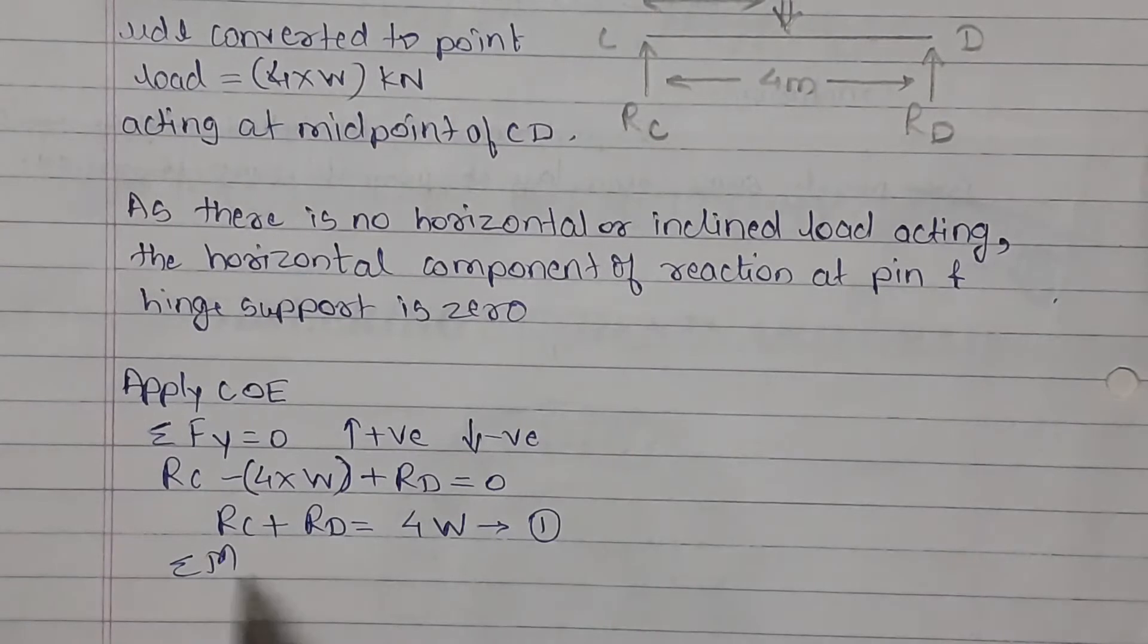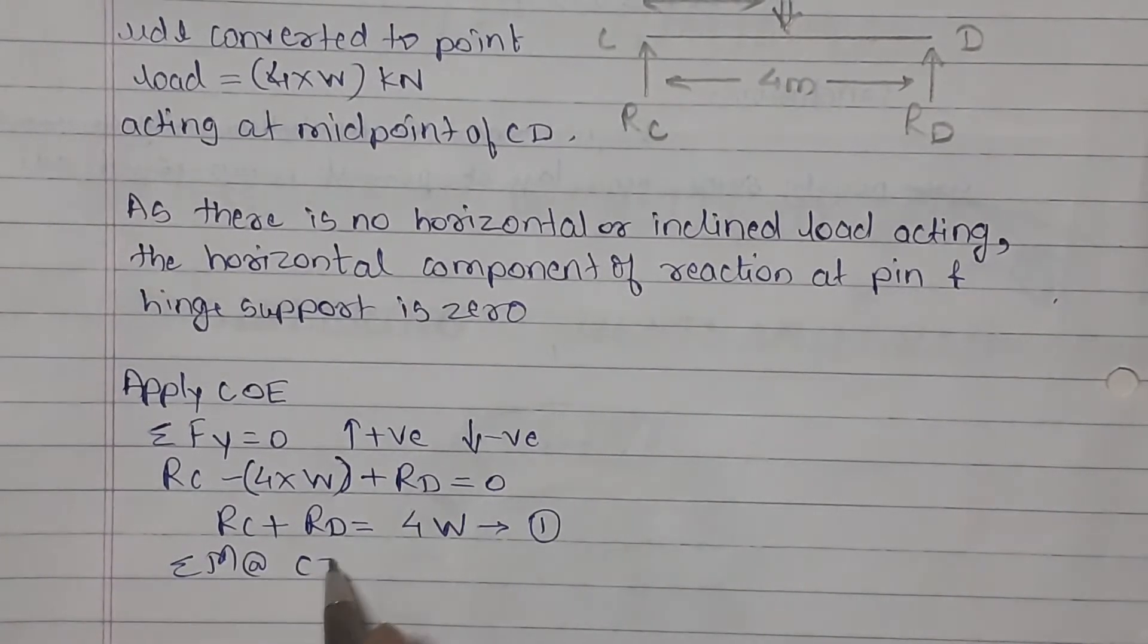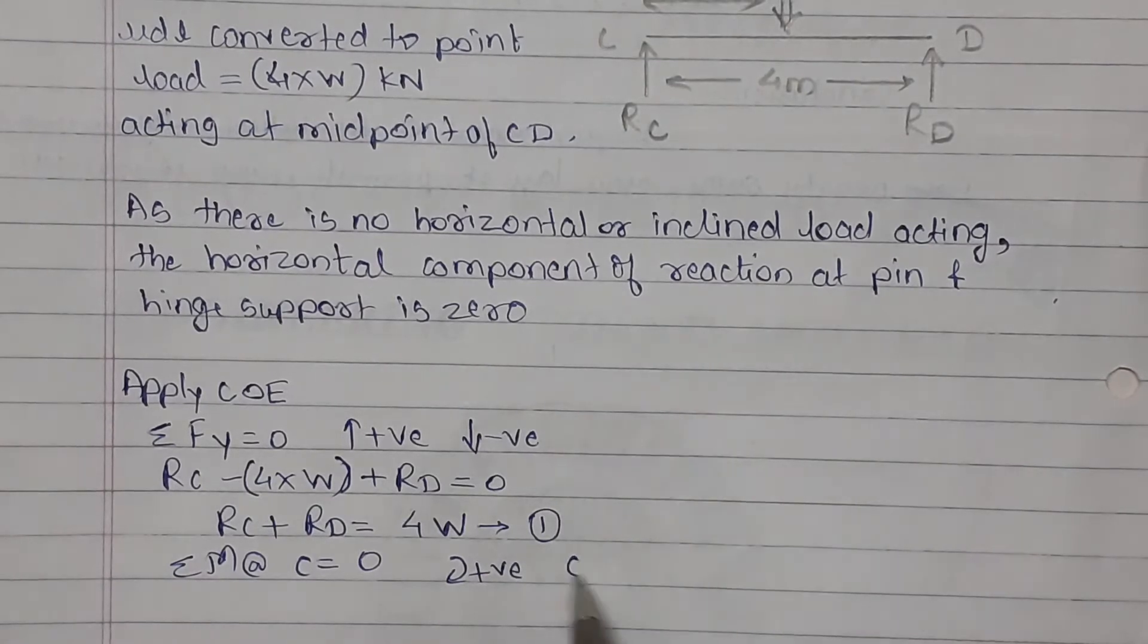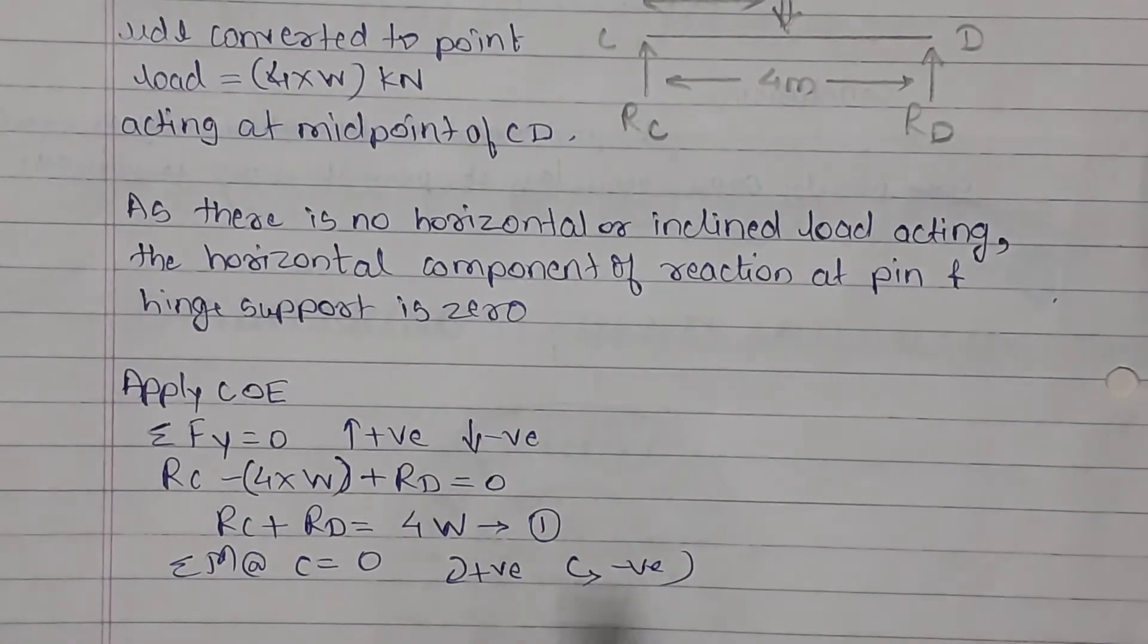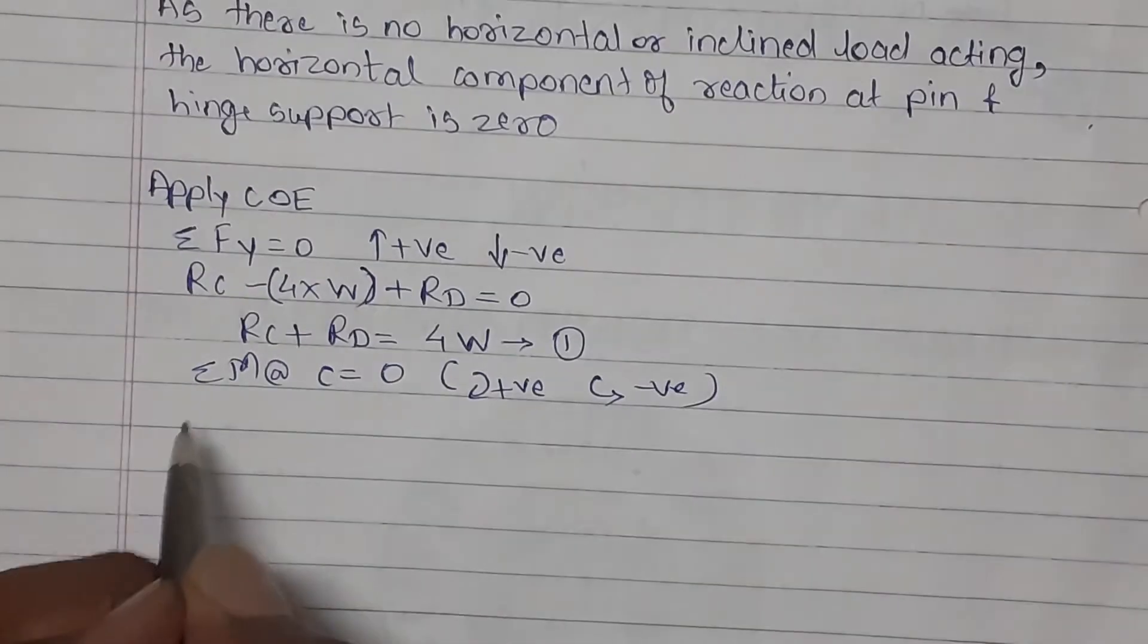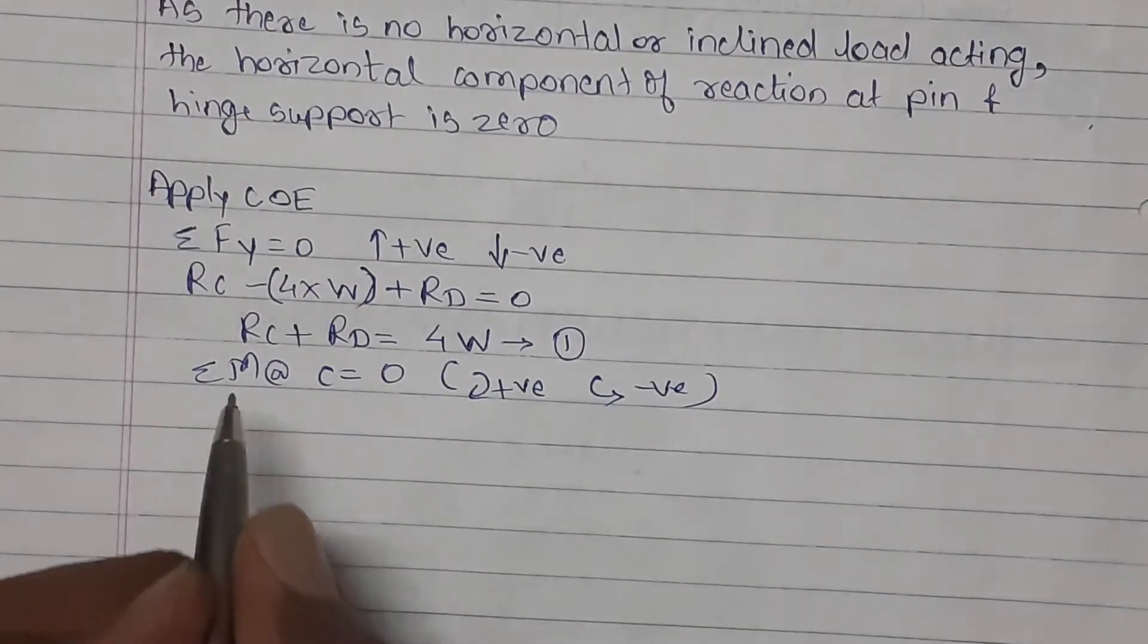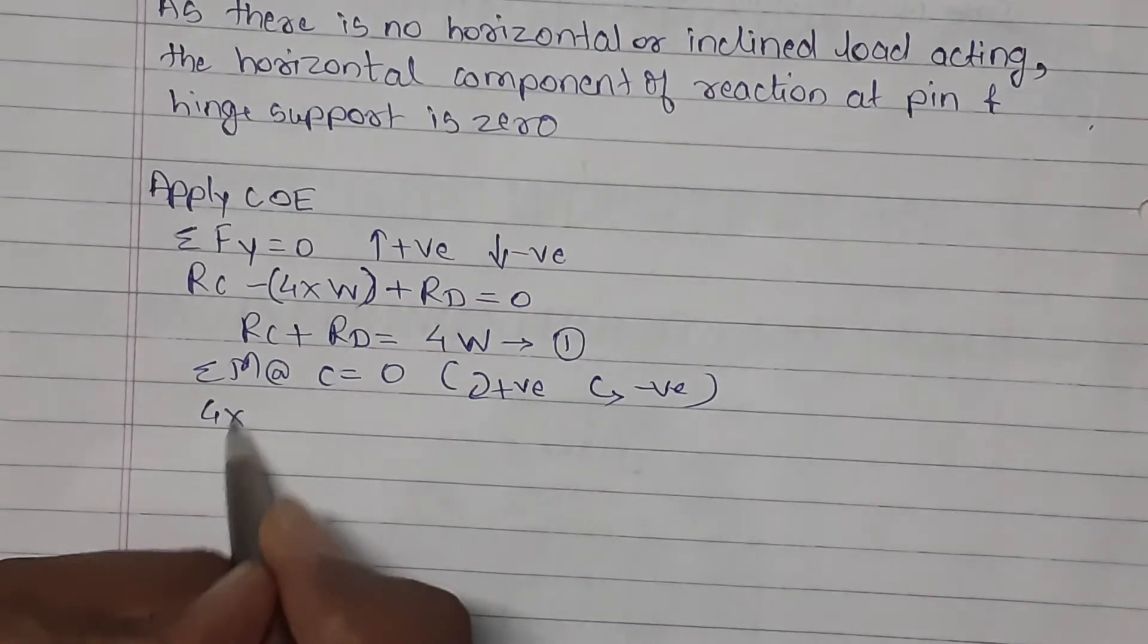Now we will take moment of all forces, suppose about point C equal to zero. Our assumption: clockwise moment positive, anti-clockwise moments taken negative. So now we are taking moment of all forces about point C.